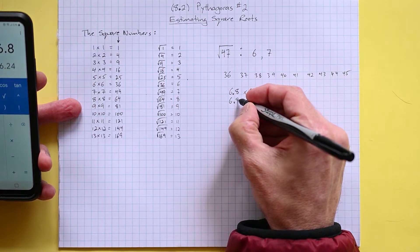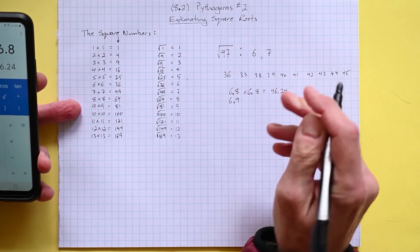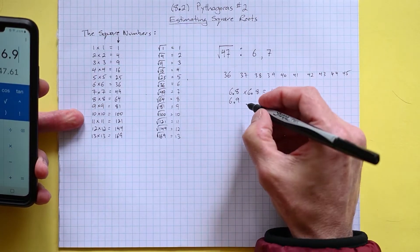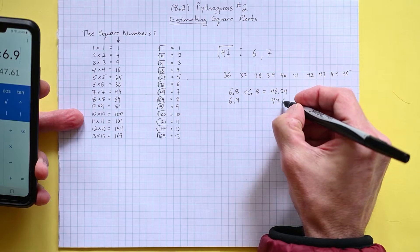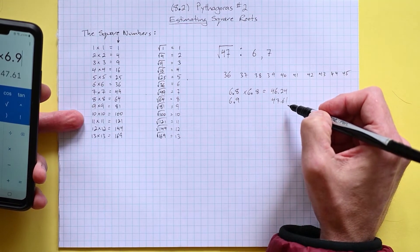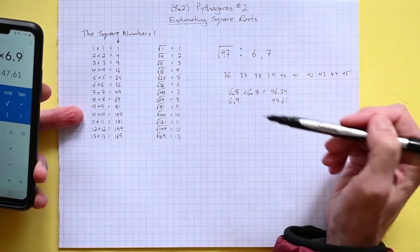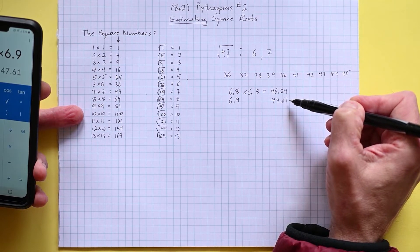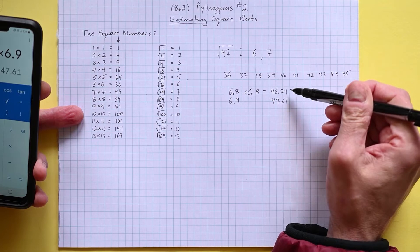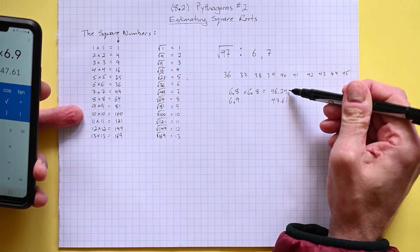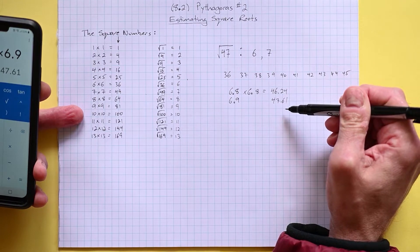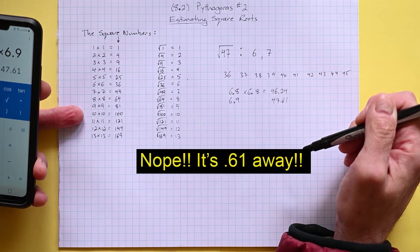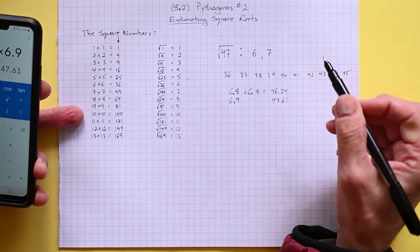We want 47, which tells me we need a bigger number. So let's see what happens if we jump up to 6.9. 6.9 times 6.9 gives me 47.61, which is actually a little bit too big, isn't it? It's over the number 47. It's actually a little bit closer though than the 6.8 was. The 6.8 was 0.76 away from 47, this one's only 0.39 away from 47, so we know we're closer to the 6.9 but we're not quite at 6.9.